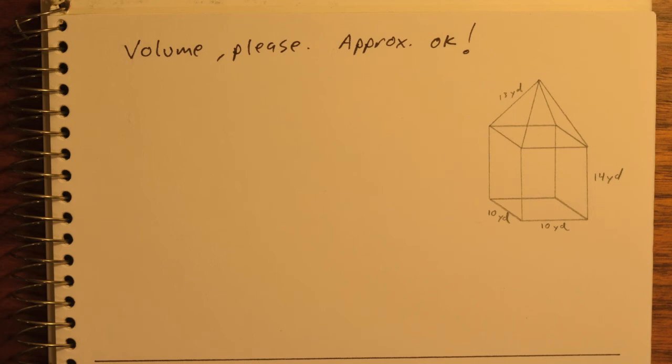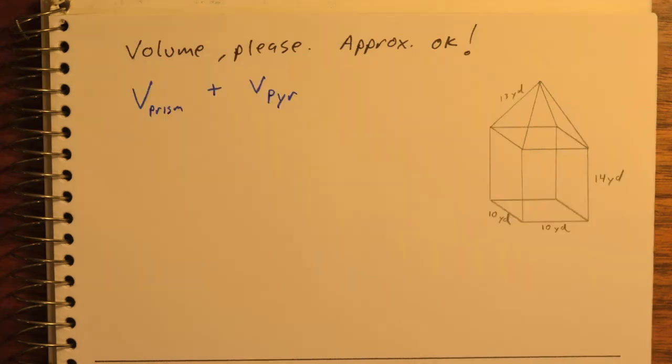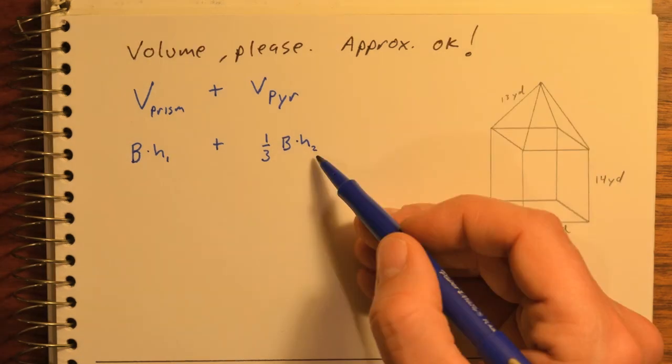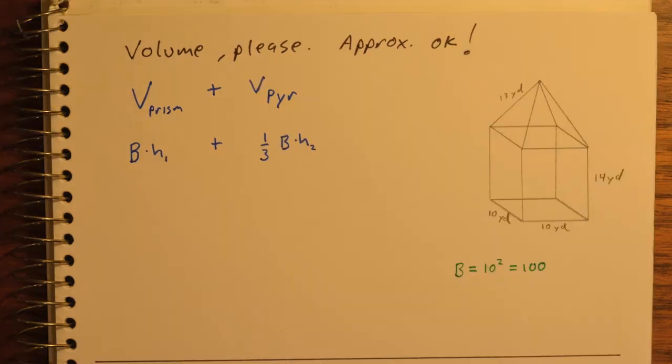We need the volume of this thing. You'll probably recall that we once found the surface area of this thing, and it was tedious. Well, finding the volume is more straightforward because all we need to do is find the volume of the prism and the volume of the pyramid, add them together. Prism is base times height. Pyramid is 1/3 base times height, but the heights of the prism and the pyramid are different. So I'll add in little subscripts, h1 and h2. First, I know the area of the base is just 10 squared. The h1, which is the height of the prism, is 14.